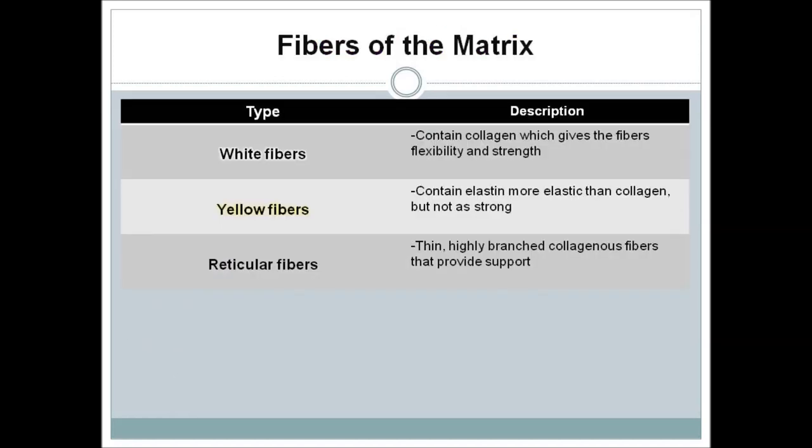The fibers of the connective tissue matrix include white fibers, which contain collagen giving flexibility and strength; yellow fibers, which contain elastin and are more elastic than collagen but not as strong; and reticular fibers, which are thin, highly branched collagenous fibers that provide support.